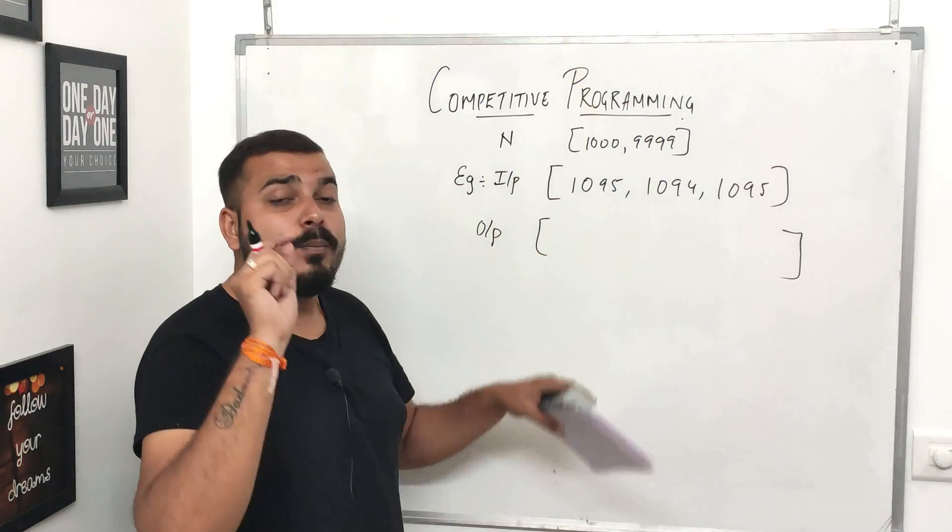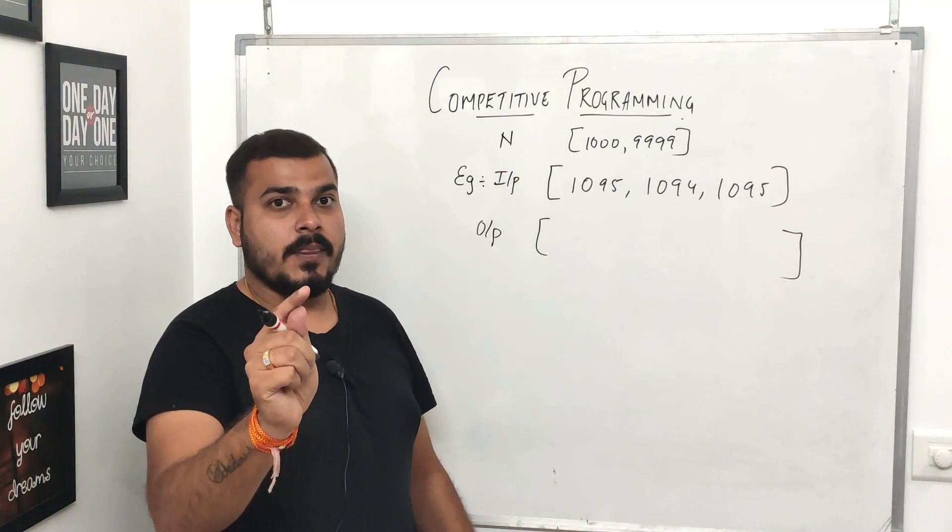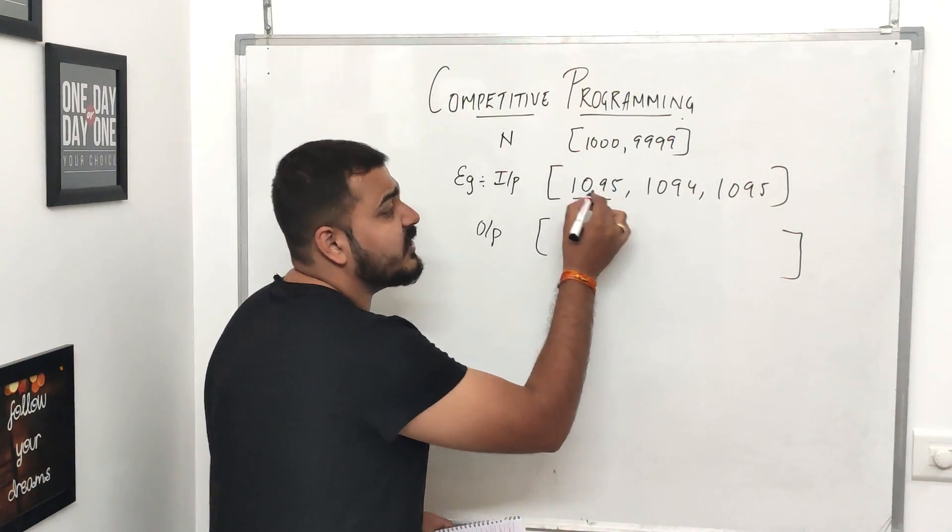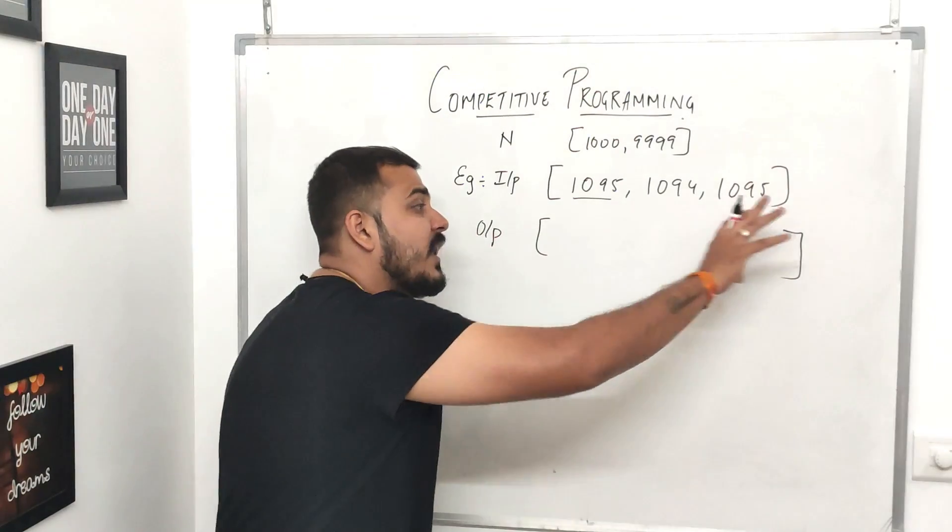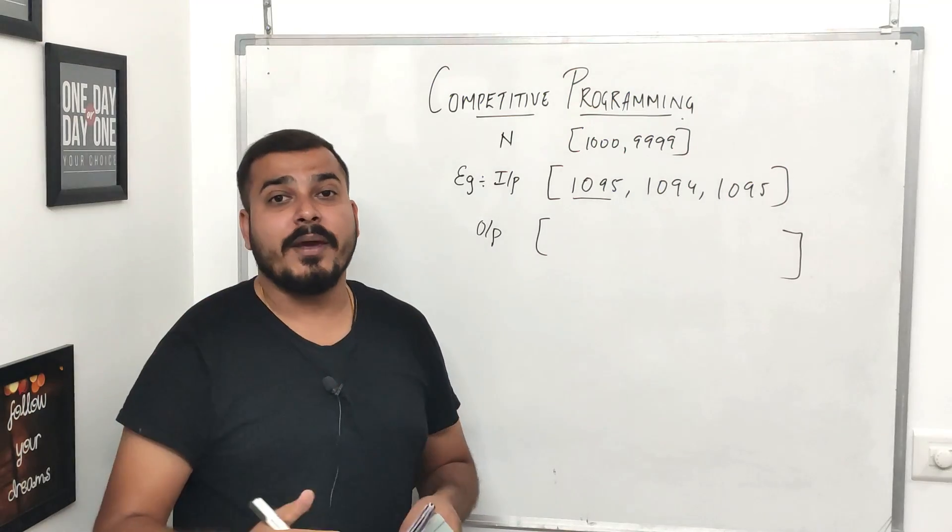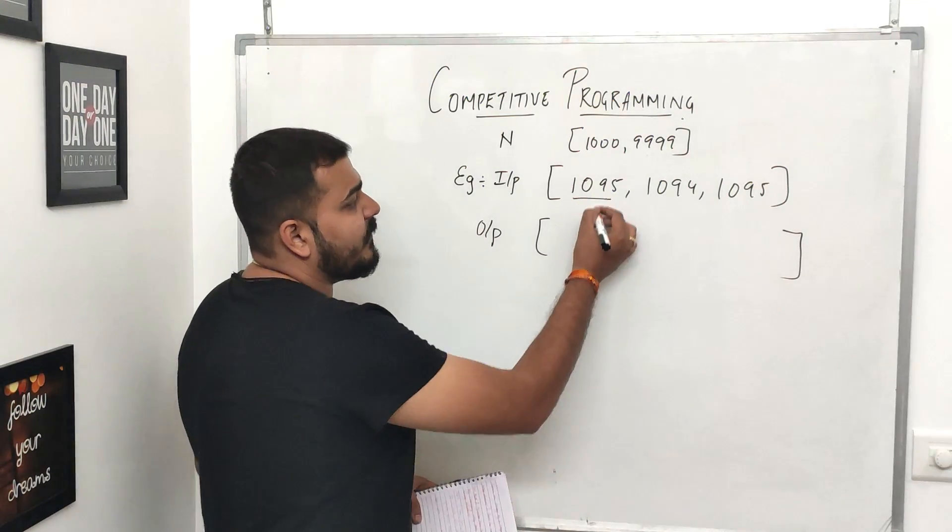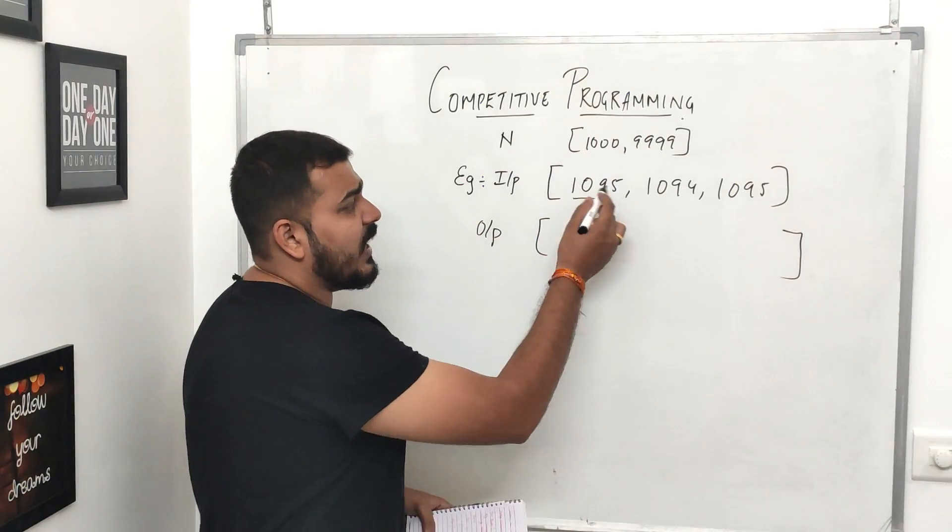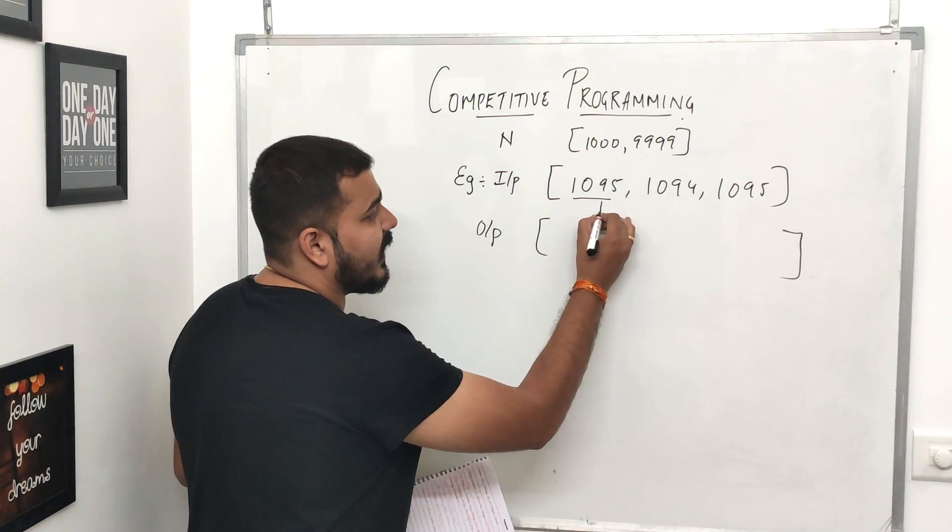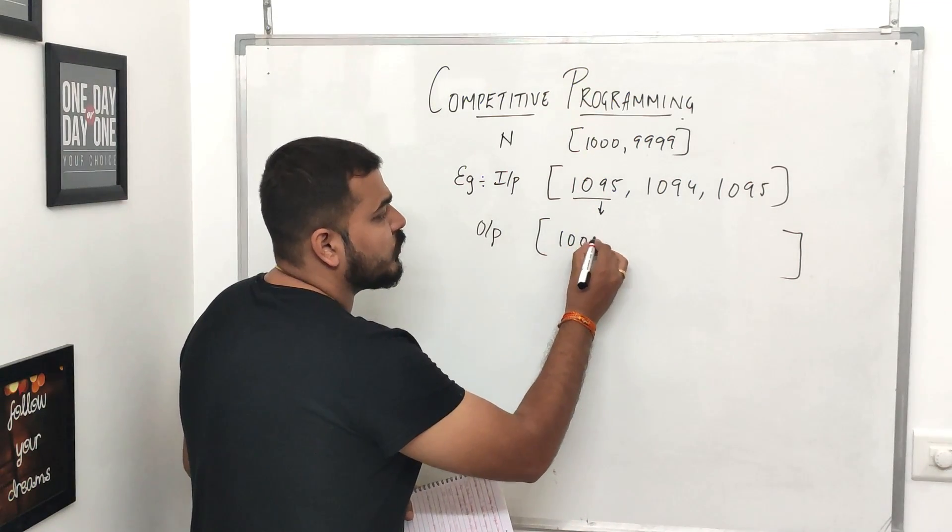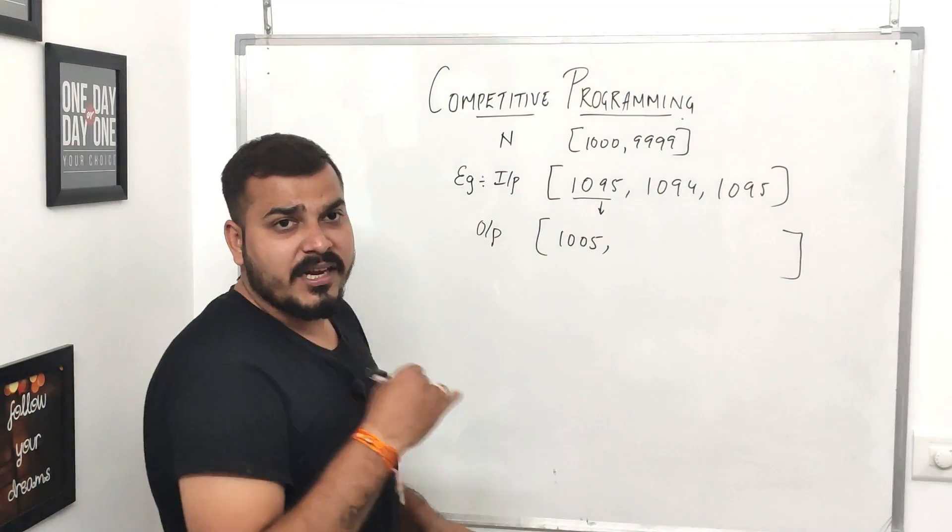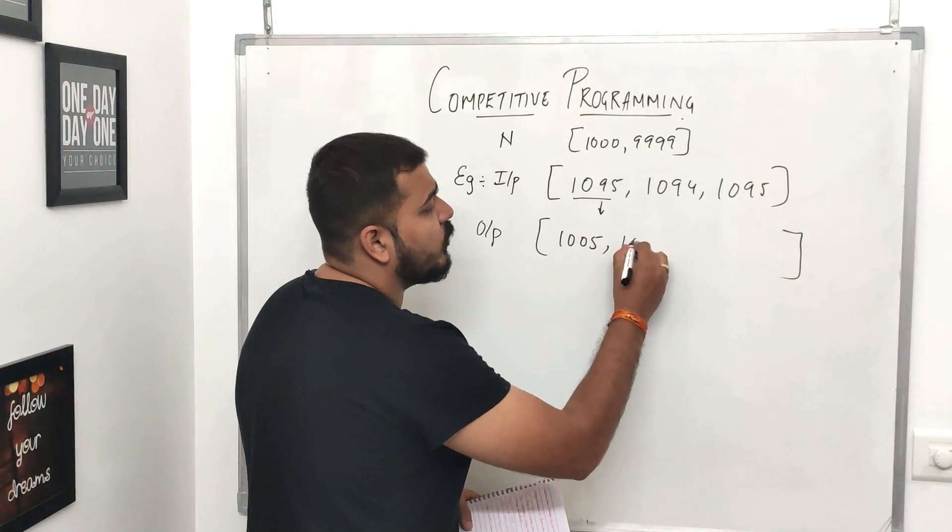I should be only able to change one bit - one digit in this particular array - and try to make this in an ascending order or non-decreasing way. So here, if I take this particular example, remember this first element should become the smallest element if I am applying this logic. Suppose if I convert this nine to zero, this will become 1005.